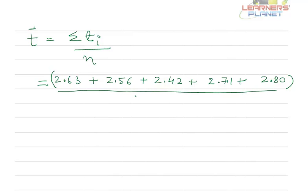And then divide by the number of observations, which is 5, we will get roughly 2.624 seconds.